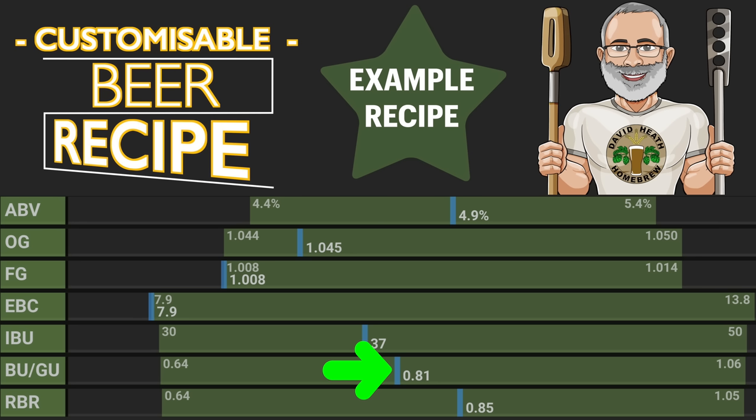The Brewfather style template used here is for a Pale Ale and you can see that Brewfather suggests a ratio for this style of between 0.64 and 1.06. So in this case this beer is under the medium level. If we were to just add more hops and increase the IBU then this ratio score would increase showing that it is more bitter, and we would get a reverse result if we increased the fermentables and increased the alcohol.